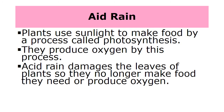Plants use sunlight to make food by a process called photosynthesis, and they produce oxygen by this process. Acid rain damages the leaves of plants so they no longer make the food they need to produce oxygen.